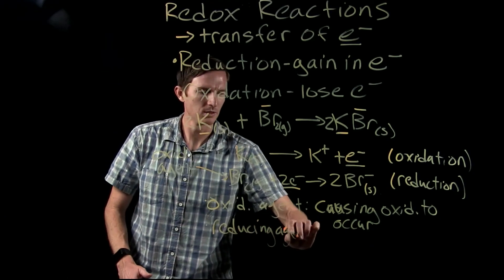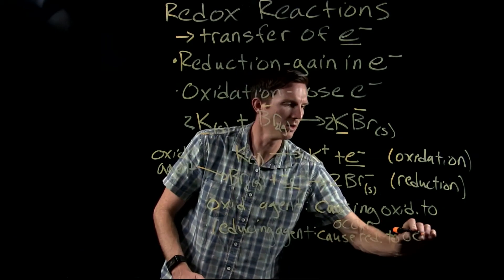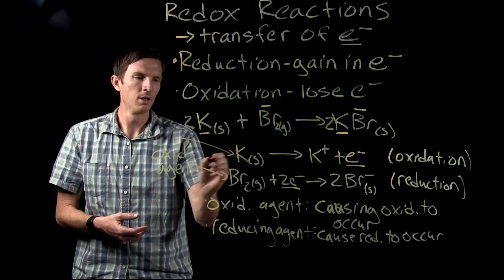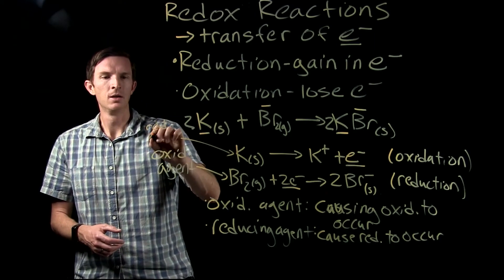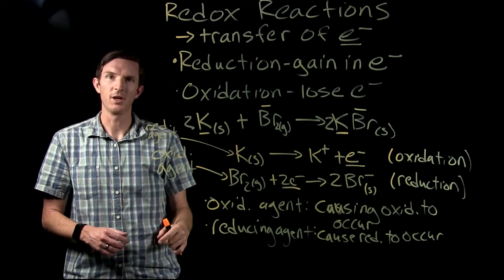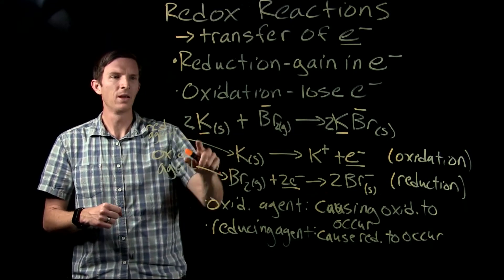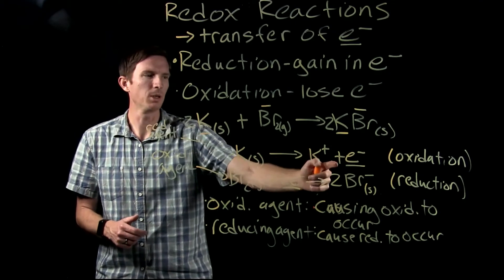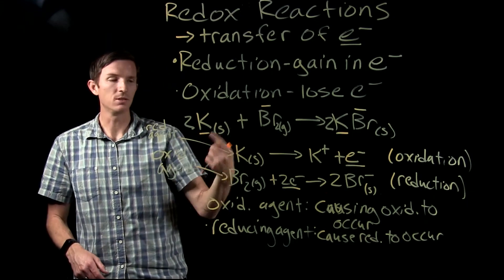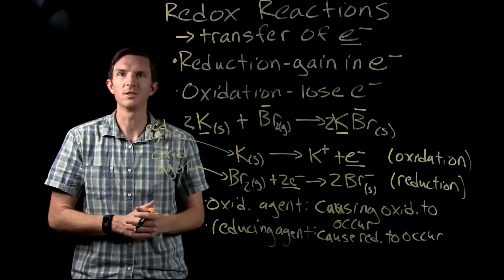Our reducing agent is something that causes reduction to occur in something else. Our bromine is being reduced and gaining electrons — those electrons come from our potassium being oxidized. So potassium is our reducing agent, the substance causing reduction to occur in bromine. To summarize: reduction means gaining electrons, oxidation means losing electrons; bromine is the oxidizing agent, and potassium is the reducing agent while itself being oxidized.